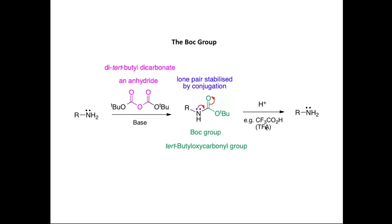We recover the amine by treating the Boc-protected compound with acid — typically trifluoroacetic acid, or trifluoroethanoic acid, abbreviated TFA. So we have these two steps: we can introduce the Boc group in a protection step, and then we can recover the amine in a deprotection step.